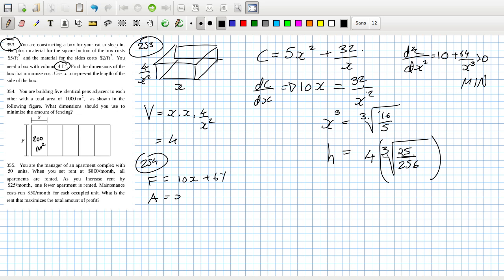But the area which equals xy has to equal 200. So that means the fencing will be 10x plus 6 times y, which is 200 over x.